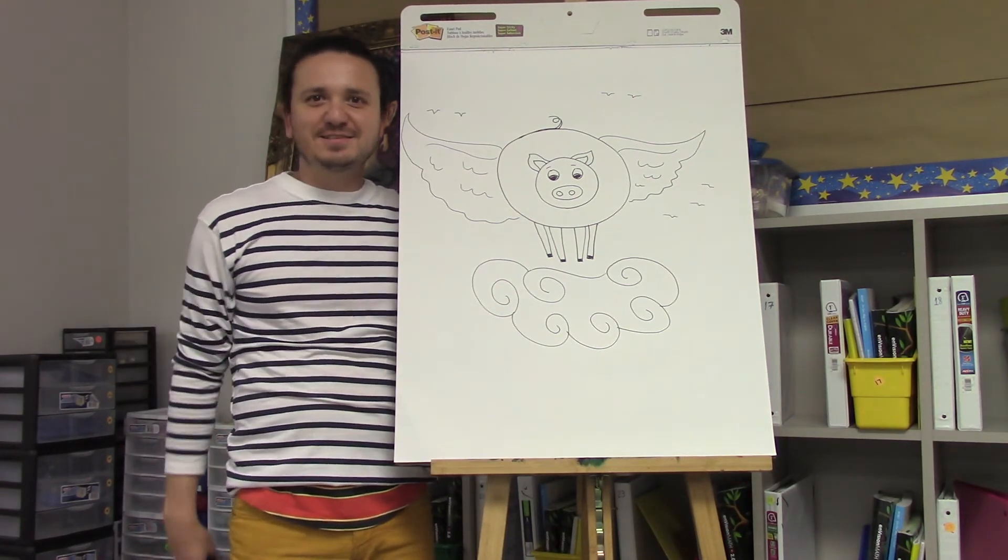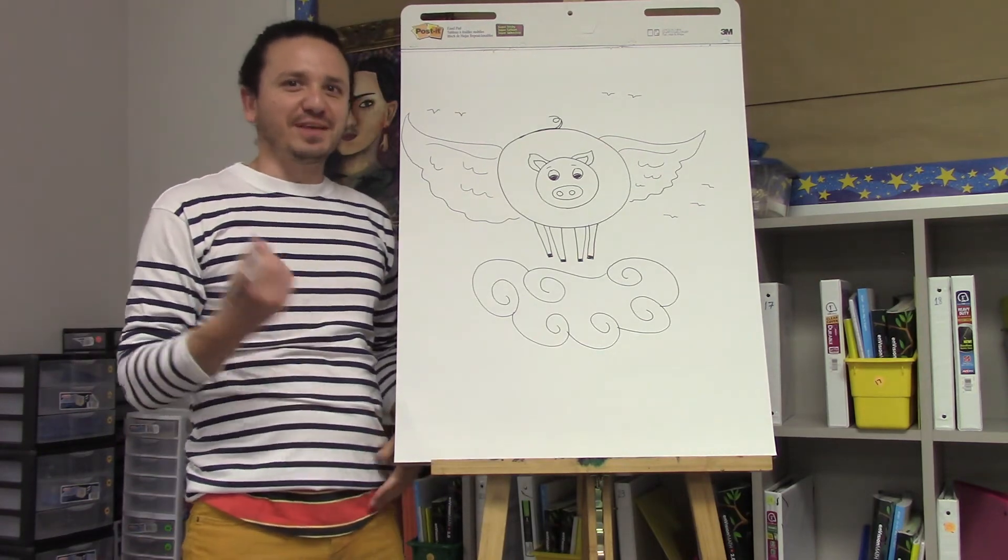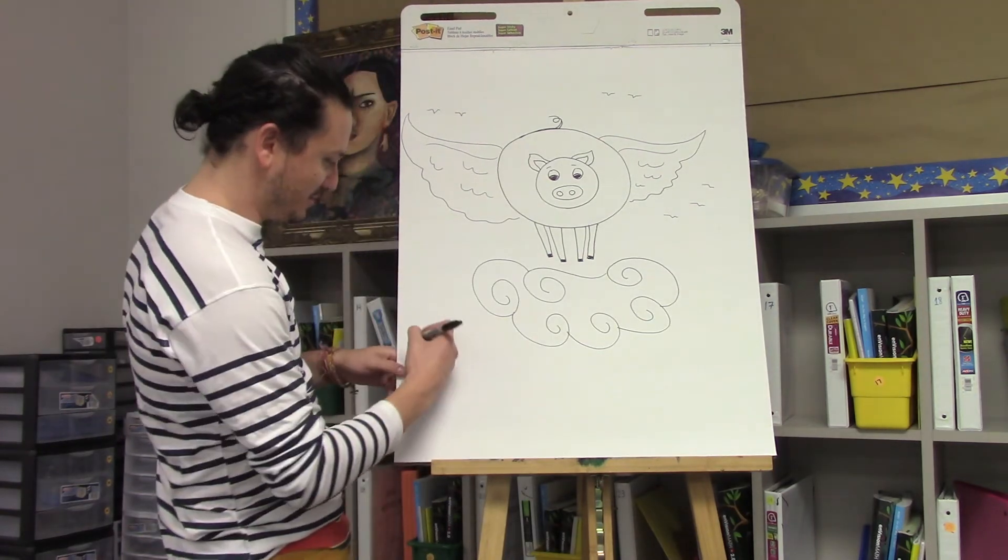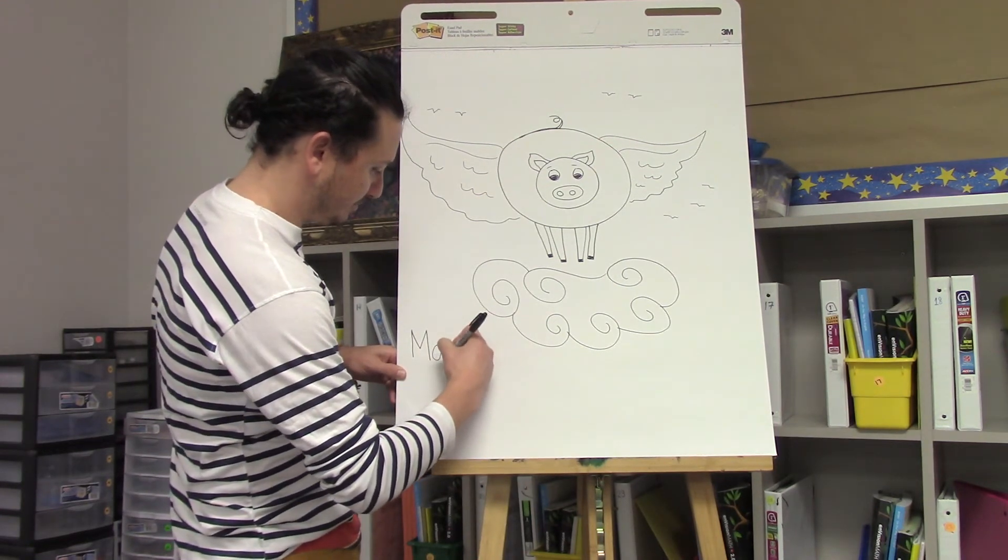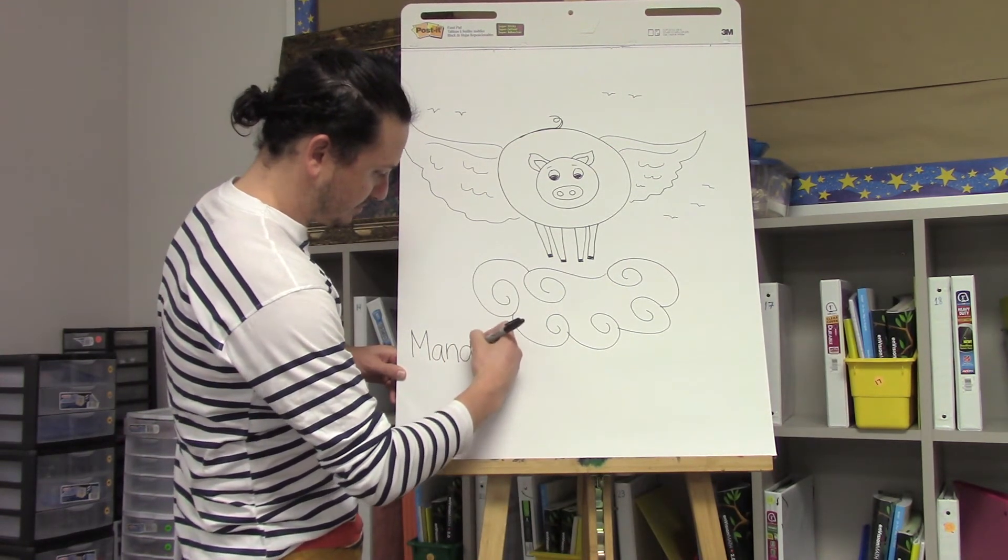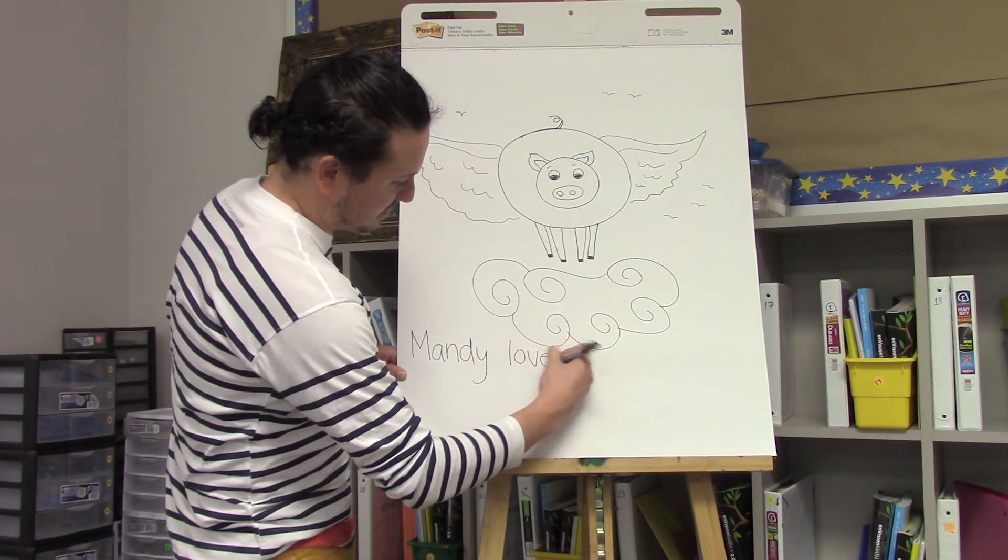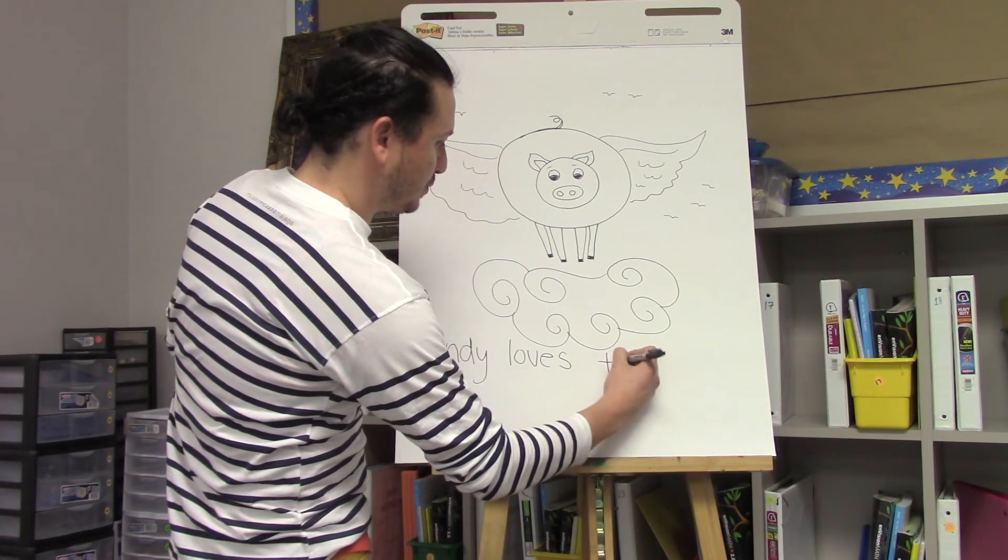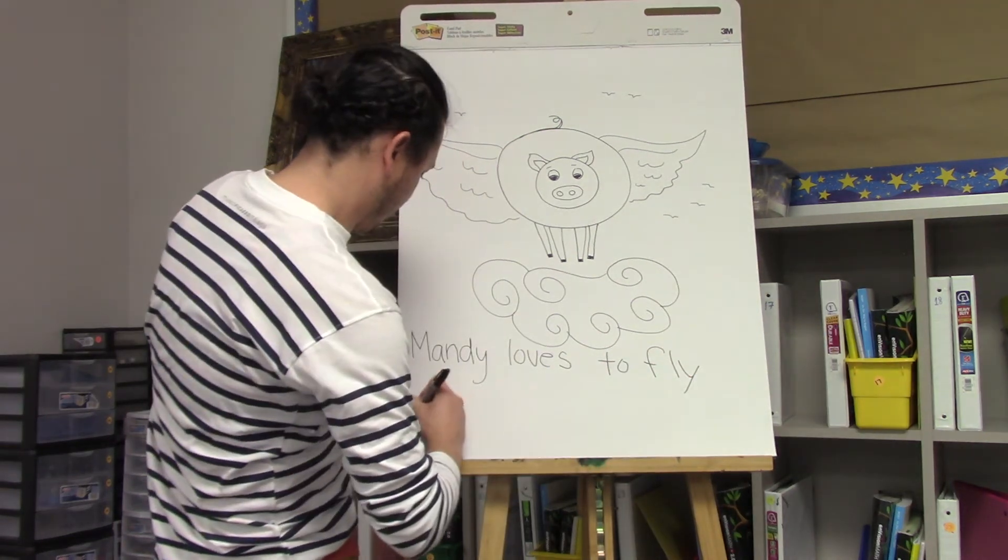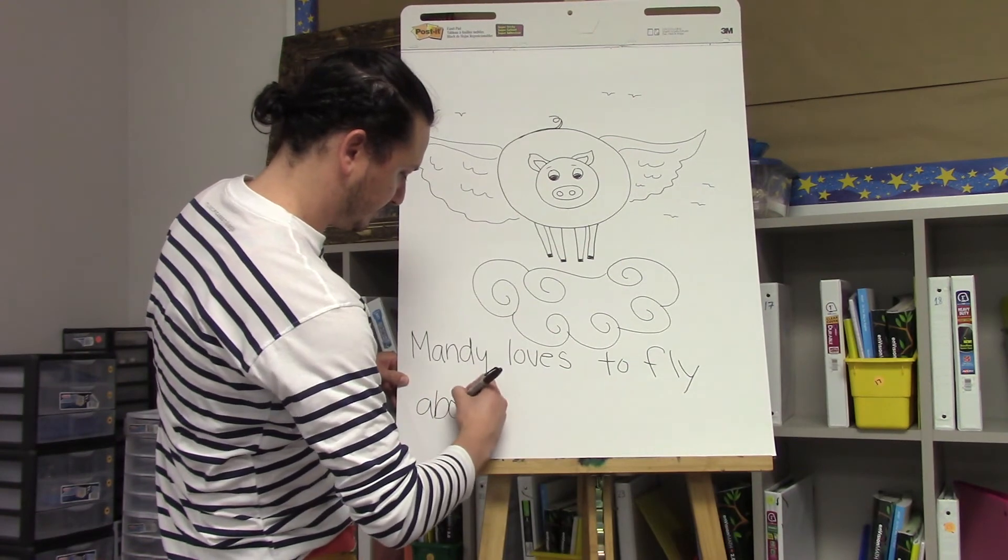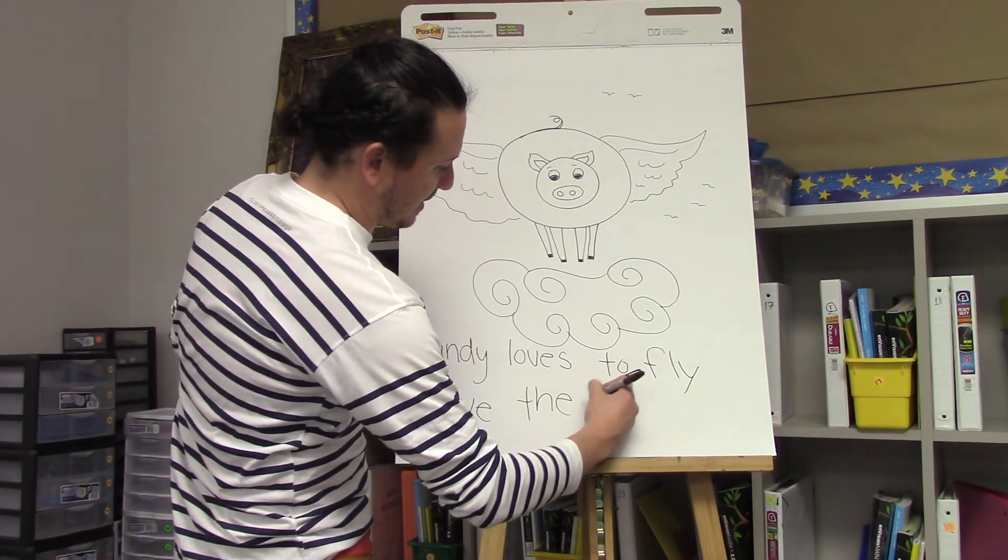Let's write a sentence about this pig. Anytime you write a sentence, remember you have to start with a capital letter. Mandy loves to fly above the clouds.